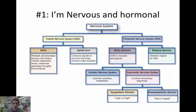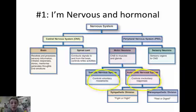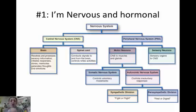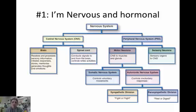The peripheral nervous system goes outside from the spinal column. In the peripheral system, you have the somatic and the autonomic. Somatic is body — voluntary movements. The autonomic nervous system is involuntary: stomach, heart, lungs. The autonomic breaks down further into the sympathetic — your fight or flight — and the parasympathetic — your rest and digest.